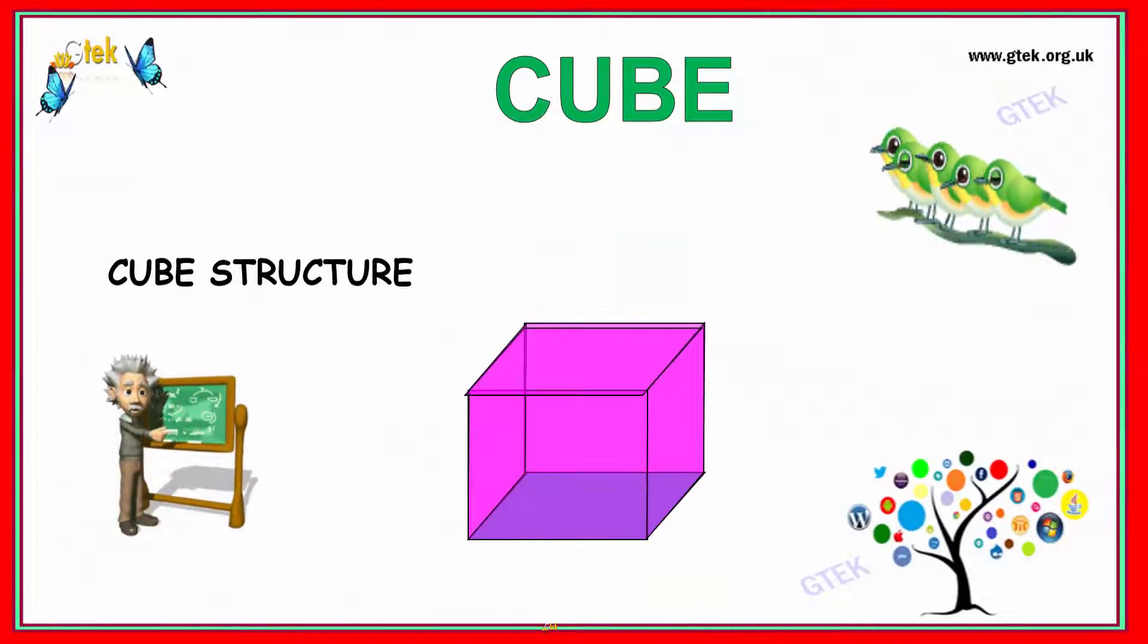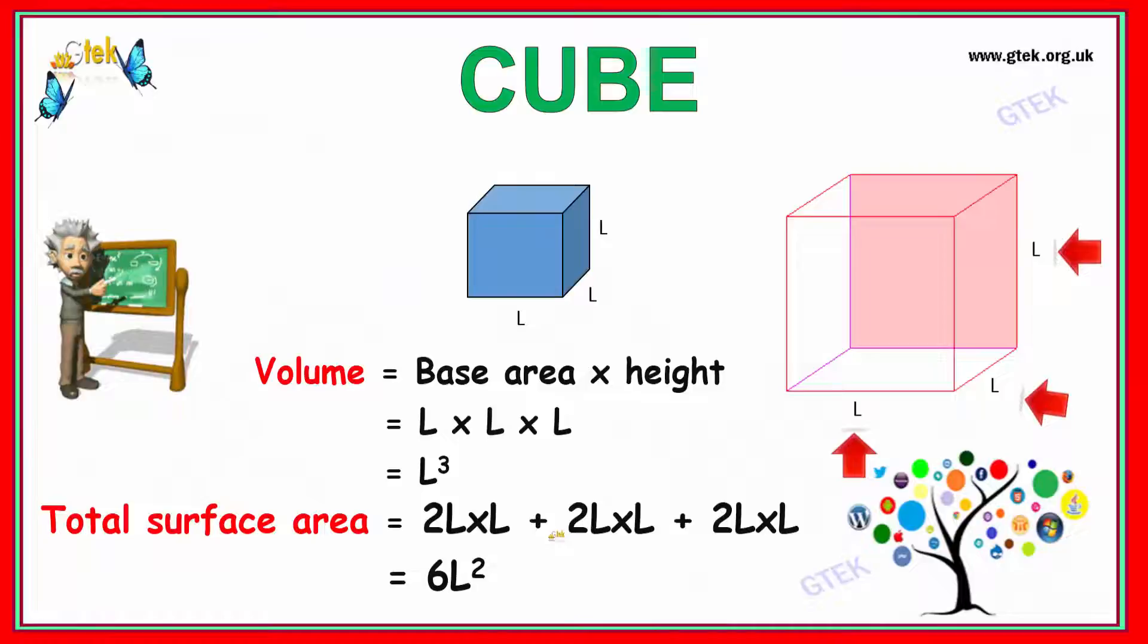Now this is your cube structure. A cube will have sides which are of equal length. For the cube, the volume is base area times height. The base area is length times breadth, or L squared. We multiply by height, so the volume of the cube is L cubed.